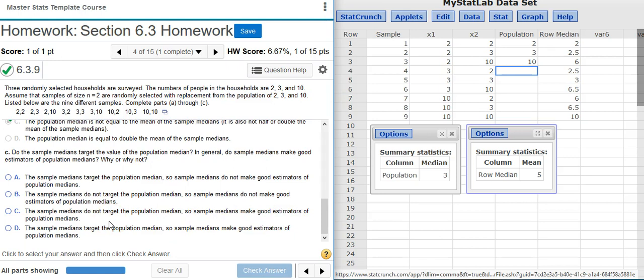Because the median is a biased estimator, it doesn't target the population median, and so therefore, it's not going to make a good estimator. So the correct answer we want is answer option B. Well done!